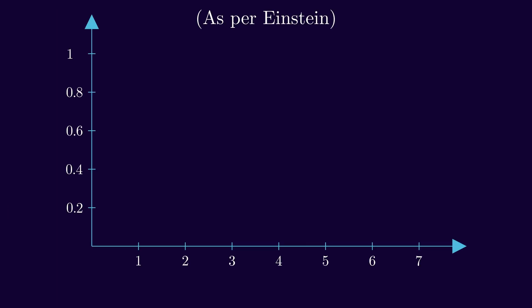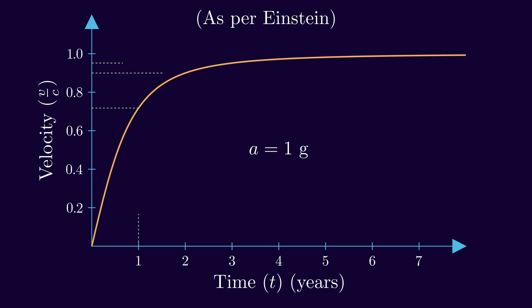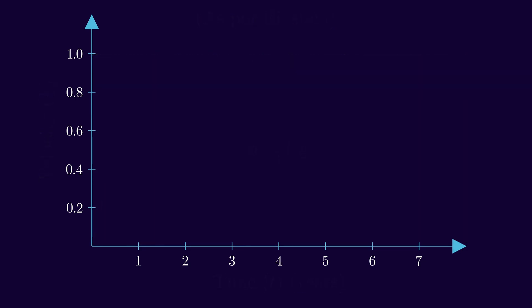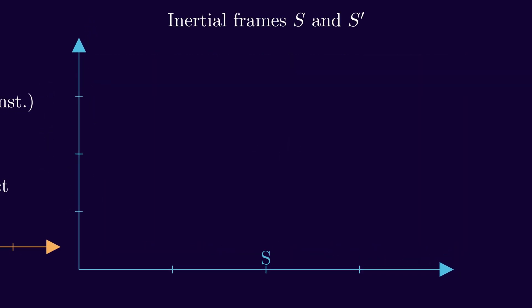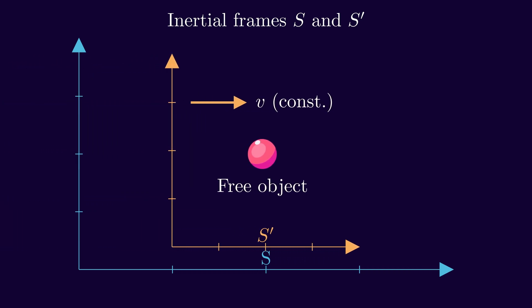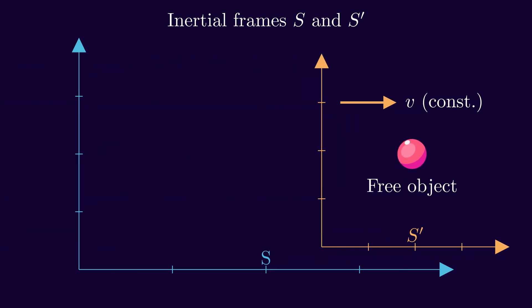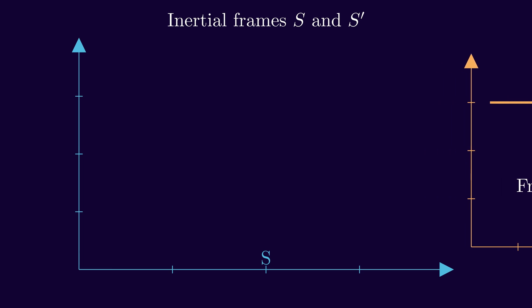However, as Einstein theorized and subsequent experiments confirmed, speed of light in vacuum is universal speed limit that applies to all physical entities in any inertial frame of reference. Here, an inertial frame is a frame of reference in which an object not acted upon by any force either remains at rest or continues to travel in a straight line at constant speed.